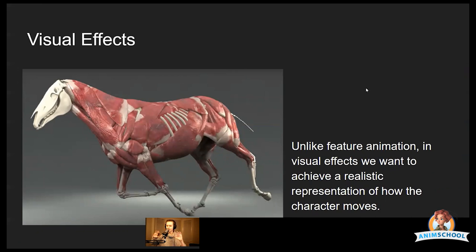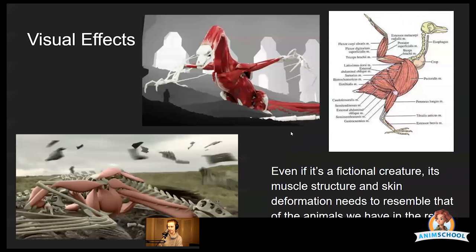In visual effects, the challenges are completely different because we want to make sure our character is realistic. We need to focus on how exactly the character deforms, what muscles move when the character moves. So for visual effects, it's very important to look at the anatomy of the character. Even if the character doesn't exist in real life, we still want to simulate their anatomy based on the anatomy of animals that we know.